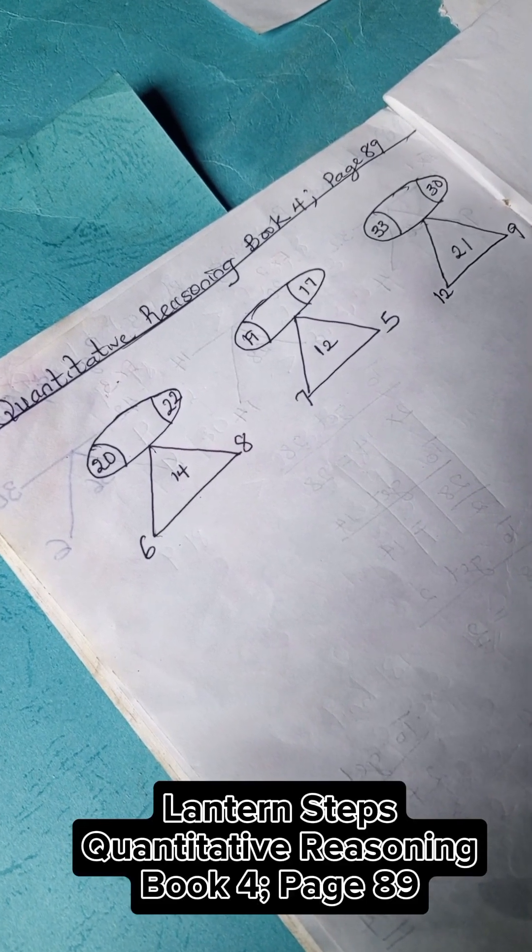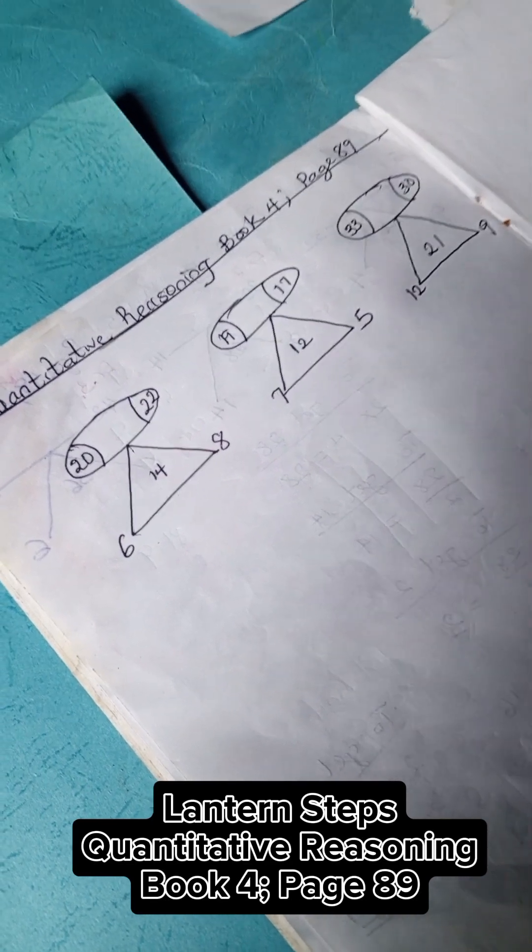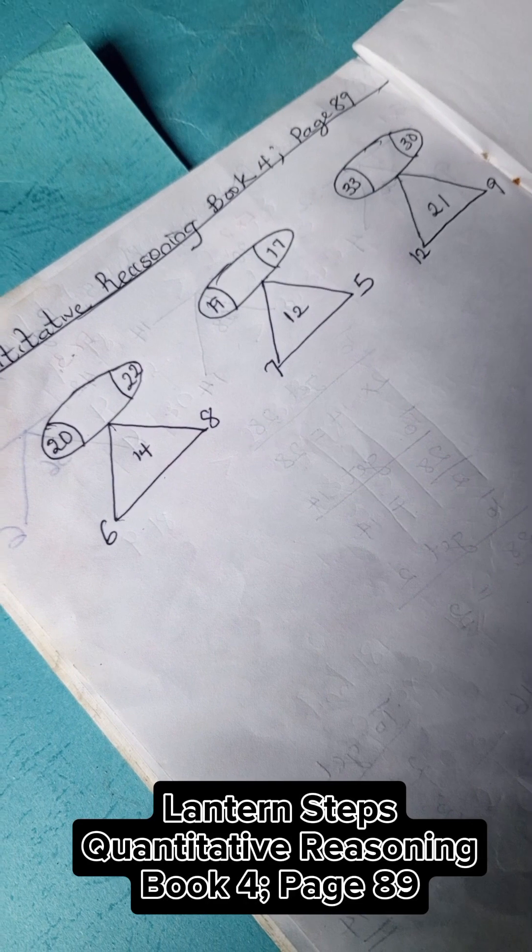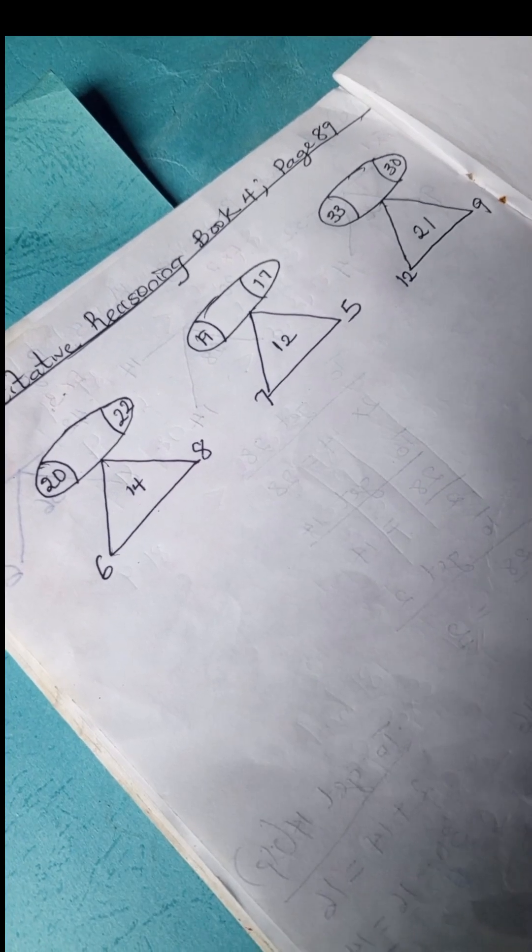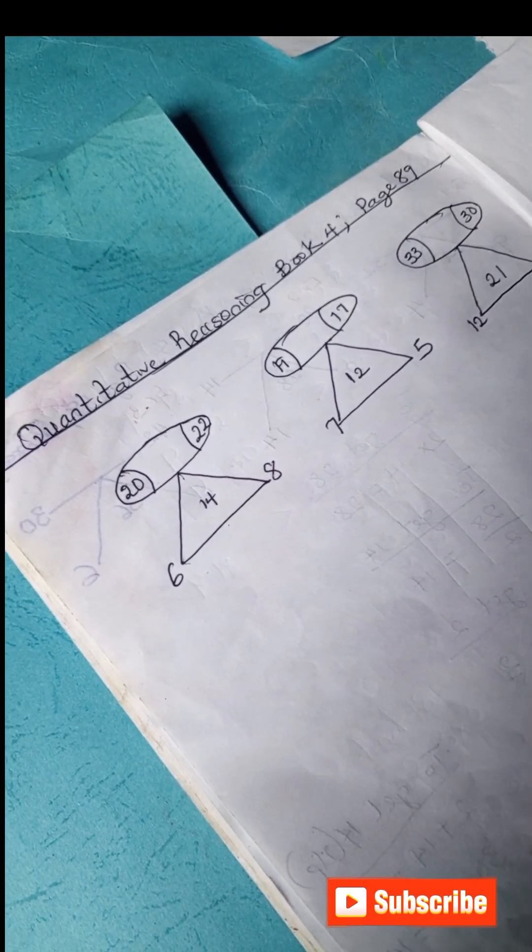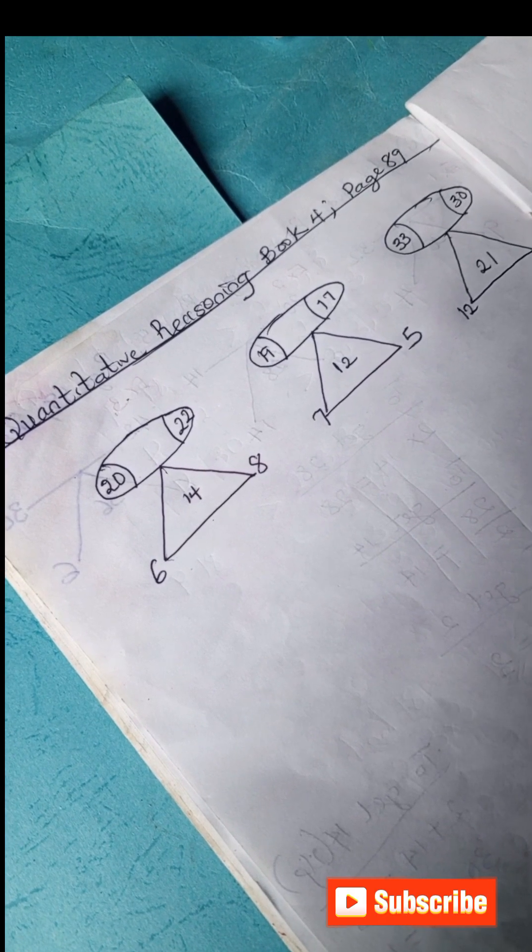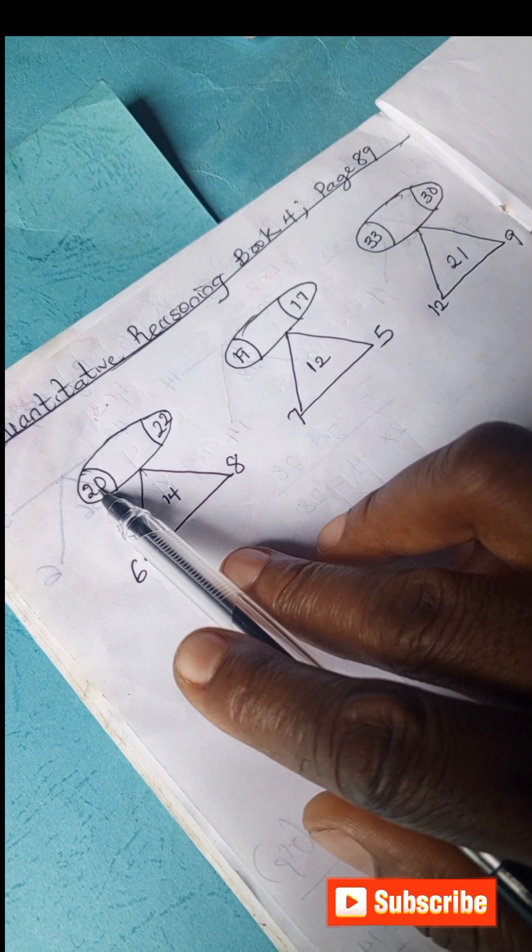Thank you for joining in today. Welcome to quantitative reasoning solution section and we have Lantern Steps Book 4 page 89. And if you're a new viewer, do well to subscribe to this channel for more quantitative reasoning and basic math learning and solutions. Okay, so we have 20, 22, 14, 6, 8.